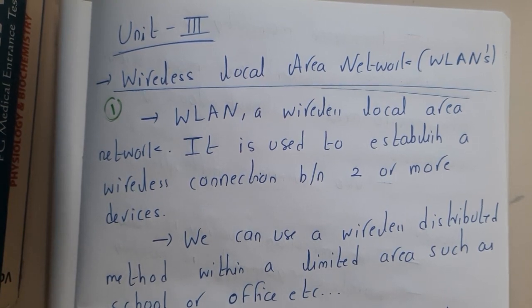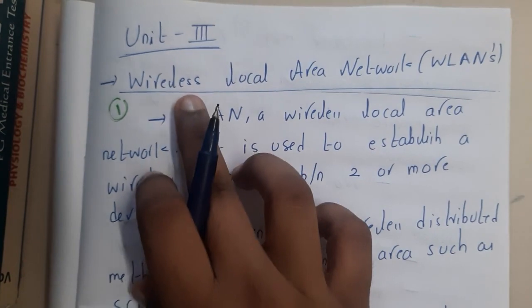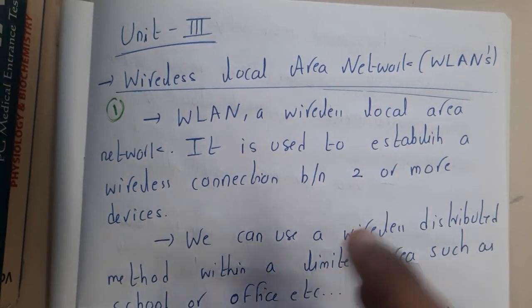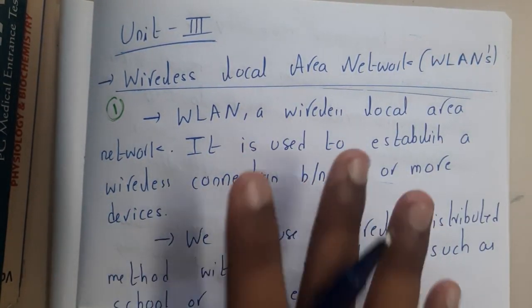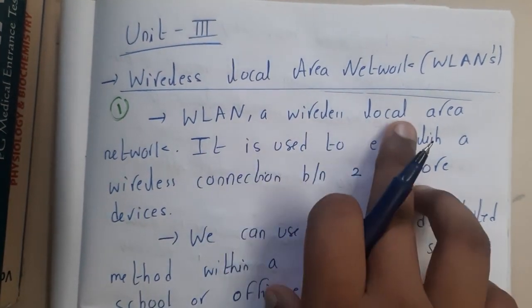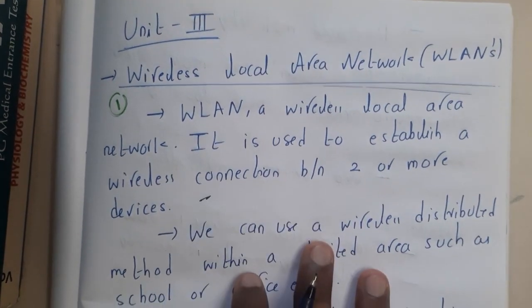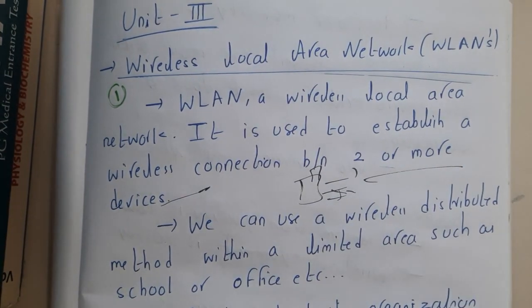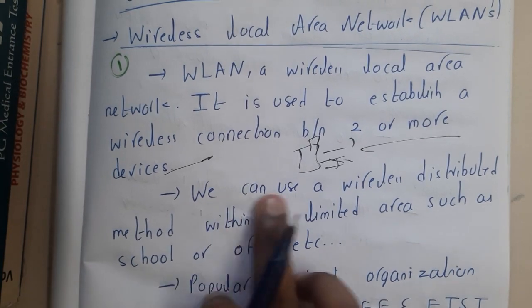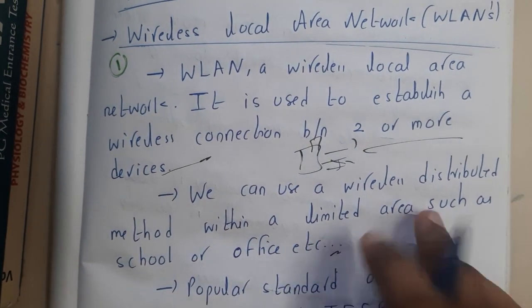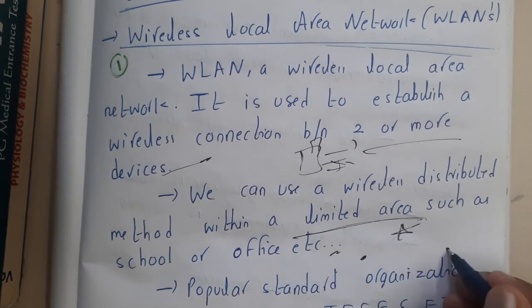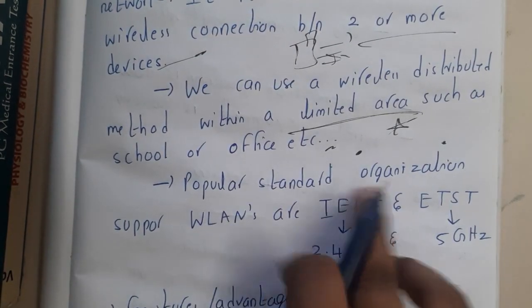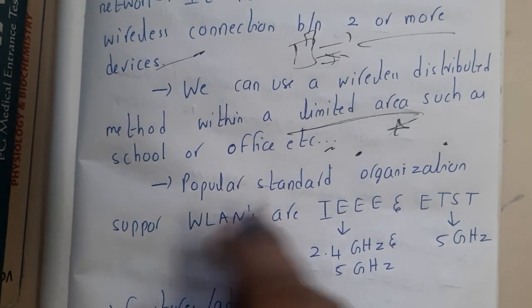Let us go through the introduction of WLAN. From the name itself, you can tell it is some kind of a wireless local area network. In your area or in a small region, if you are connecting wirelessly using some network, that is your wireless local area network. A WLAN is used to establish a wireless connection between two or more devices. With a single internet modem, you can connect up to 20 or 100 devices, within a limited area.